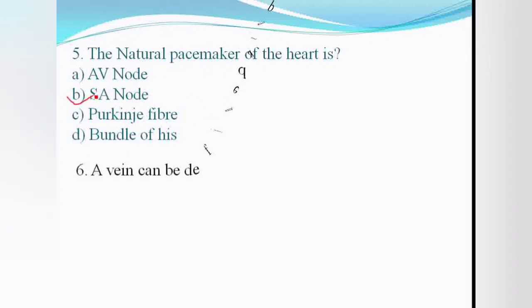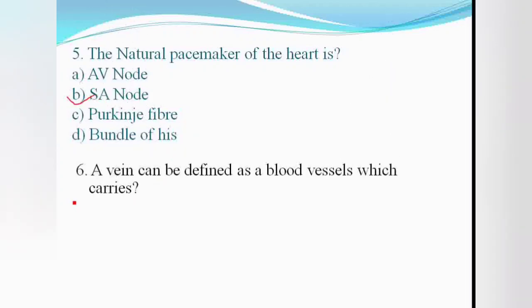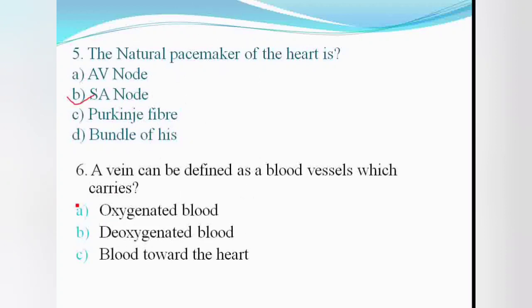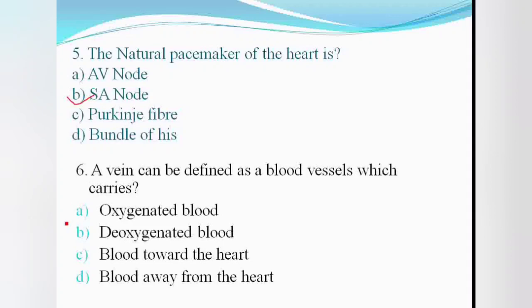The vein can be defined as a blood vessel which carries: oxygenated blood, deoxygenated blood, blood towards the heart, or blood away from the heart. Answer: blood towards the heart. Note: deoxygenated blood goes to the pulmonary vein.